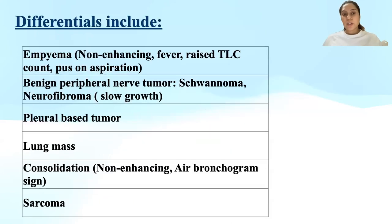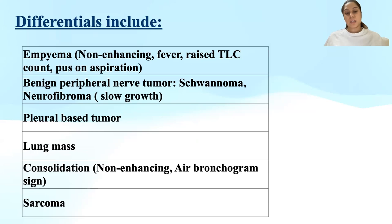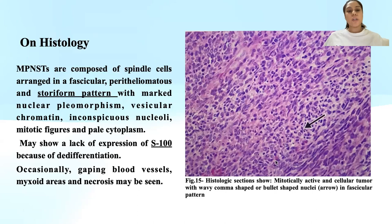Differentials of MPNSTs include empyema, which can be differentiated as empyema is non-enhancing; the patient presents with fever, raised TLC count, and on aspiration, pus is seen. Other differentials include benign peripheral nerve tumors, which are slow-growing compared to MPNSTs, pleural-based tumors, lung masses, consolidation, and sarcoma.